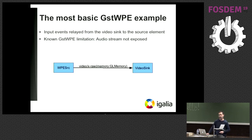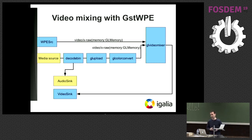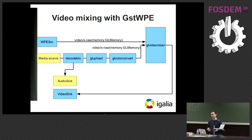There's a limitation in that right now the source element pushes only video frames, so there's no audio support yet. A more complex example involves video mixing. On the left you have the source elements — two sources: a media source that can use any kind of media you want to provide to the pipeline, and the WPE source. The media source gets decoded and goes to a GL video mixer, so everything happens in the GPU. There's no download to central memory, and the video frames are composed together in the GL video mixer and output to the video sink.